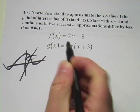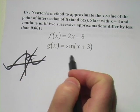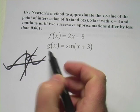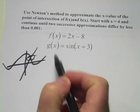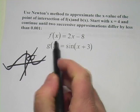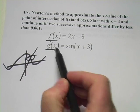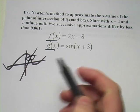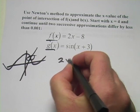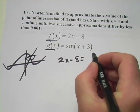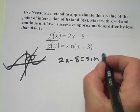At that point, the x values and the y values are the same for these two functions. So we can represent this point of intersection by setting the two functions equal to each other. f(x) will equal g(x) at that point of intersection. So I can say 2x - 8 equals sin(x + 3).